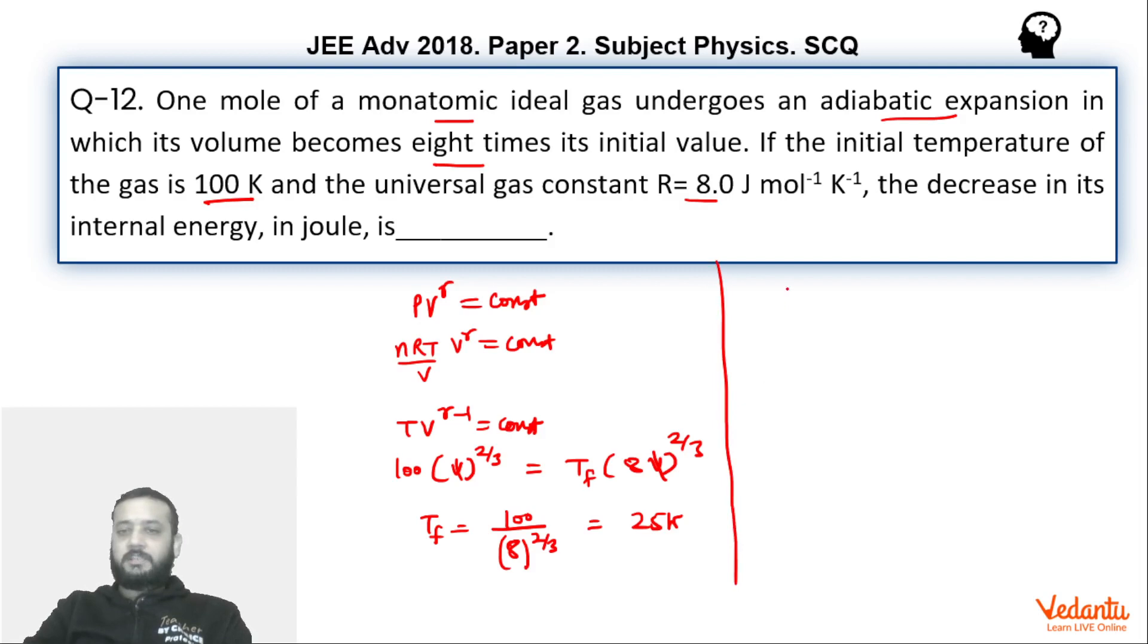Now the change in internal energy. That is nC_v ΔT. n here is one. C_v for the monatomic gas is 3/2 R, and ΔT is 25 minus 100, so that means -75.